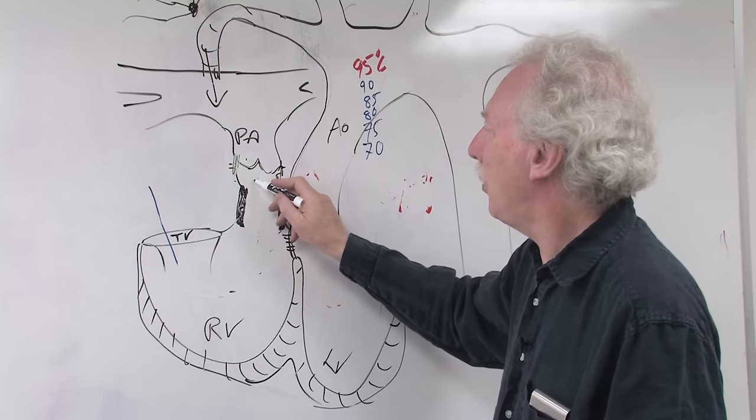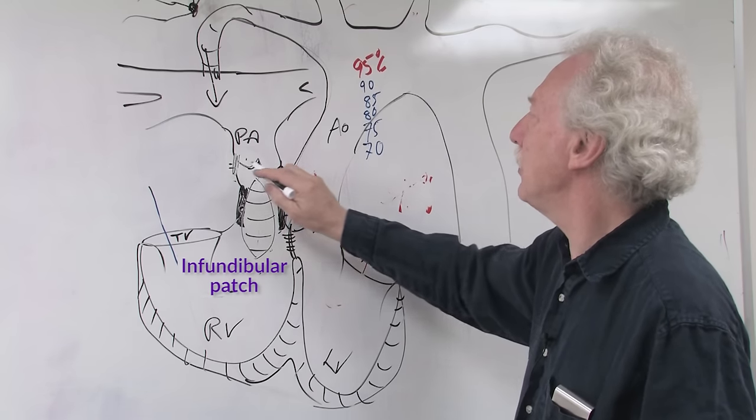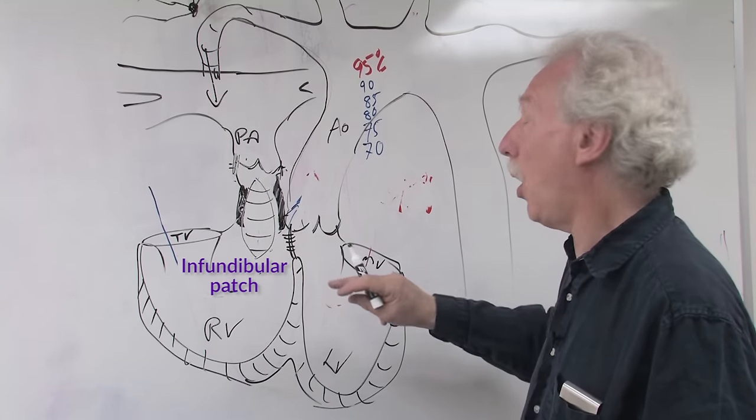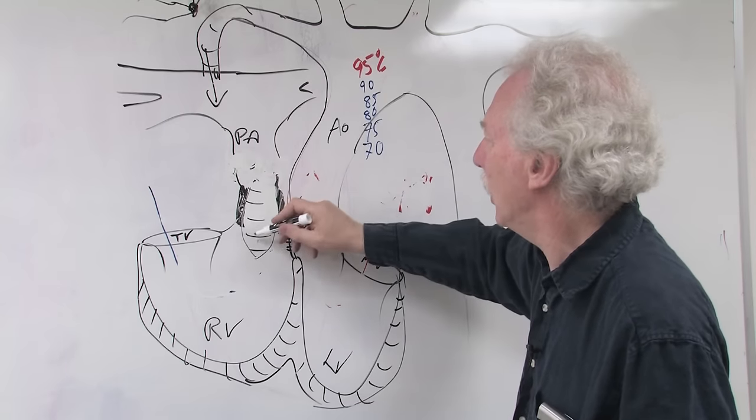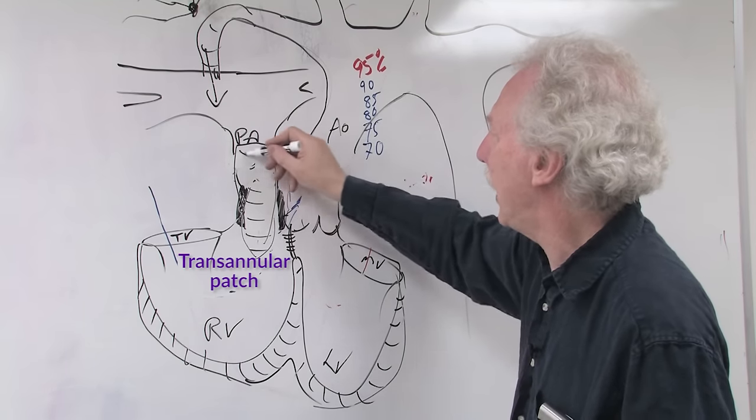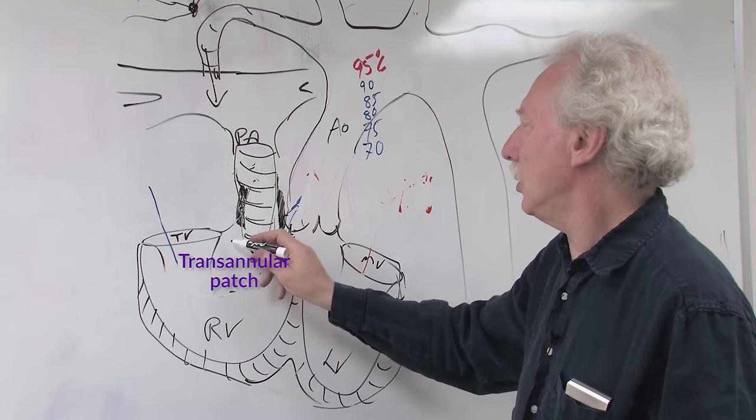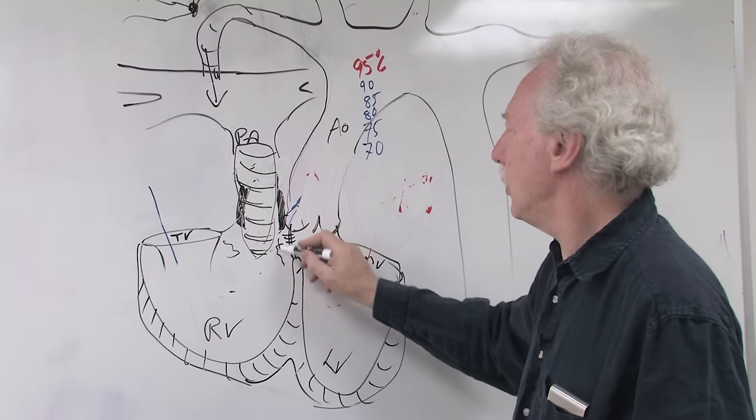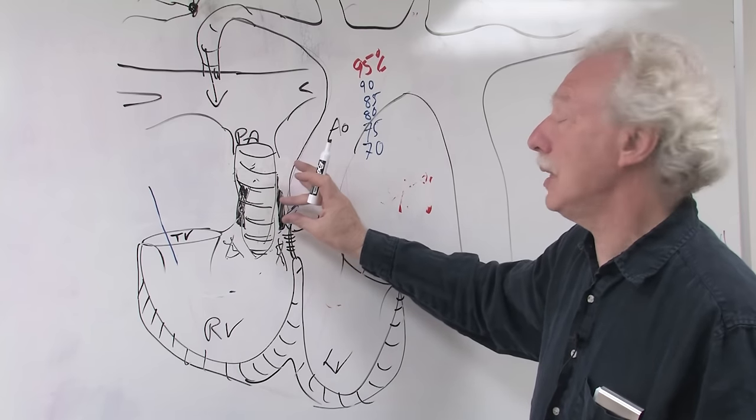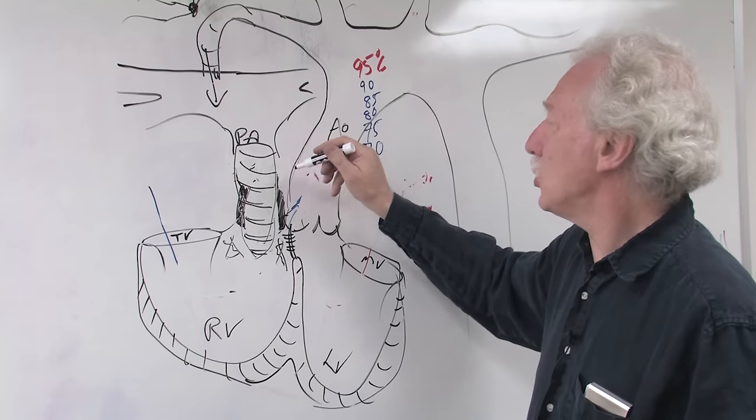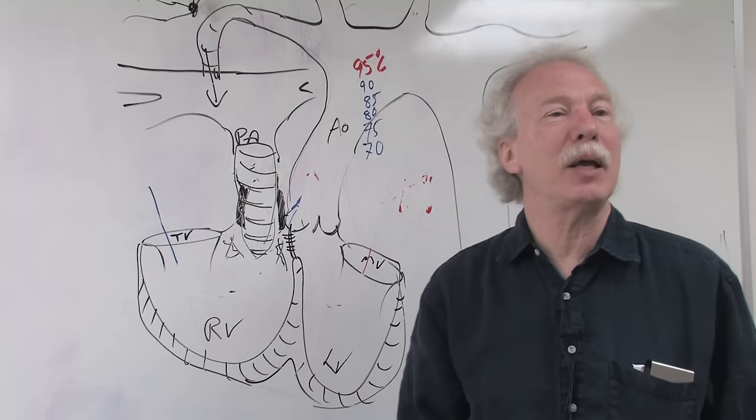More often than not, this whole pathway was narrow, and so it would be enlarged by an infundibular patch. And sometimes, if the pulmonary annulus was small, you had to enlarge the whole pathway, and so you would put what we refer to as a transannular patch, which would extend from within the right ventricle, and if there were extra muscle bundles, those would be resected. It would extend across the infundibulum, or the outflow area of the right ventricle, and with a transannular patch, across the narrow pulmonary valve annulus and into the main pulmonary artery.